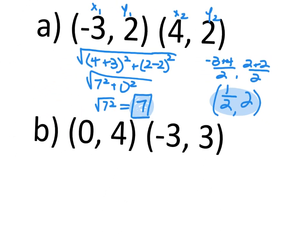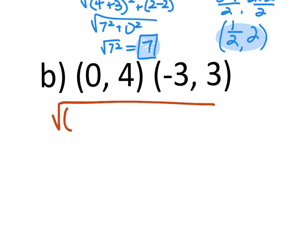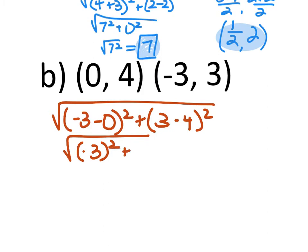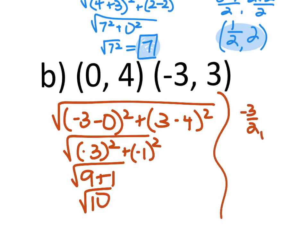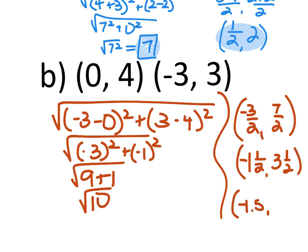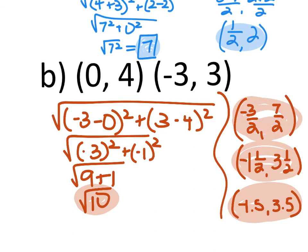For part B you should have gotten square root of 10, which stays as root 10. Your midpoint can be in any of three formats: negative three-halves and seven-halves as improper fractions (as long as they're reduced), or converted to mixed fractions as negative one and one-half and three and one-half, or as decimals: negative 1.5 and 3.5. Any of those answers are acceptable.